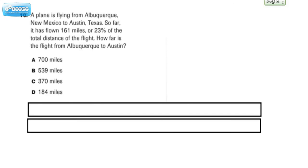A plane is flying from Albuquerque, New Mexico to Austin, Texas. So far it has flown 161 miles, or 23% of the total distance of the flight. How far is the flight from Albuquerque to Austin?